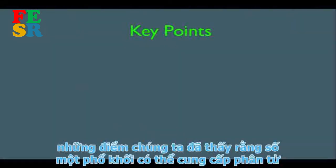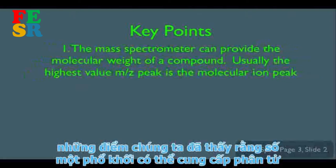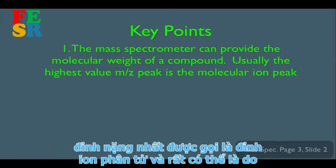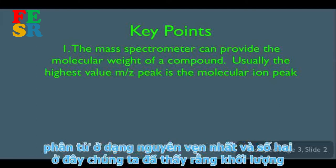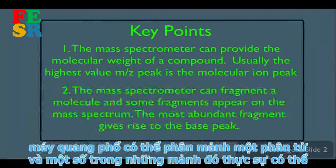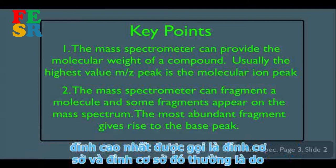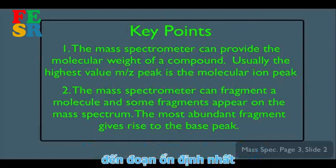Key points from this lecture: Number one, the mass spectrum provides the molecular weight of a compound — the highest m/z peak is the molecular ion peak, most likely due to the molecule in its most intact form. Number two, the mass spectrometer fragments molecules, and the most abundant fragment gives rise to the tallest peak — the base peak — which is usually due to the most stable fragment.